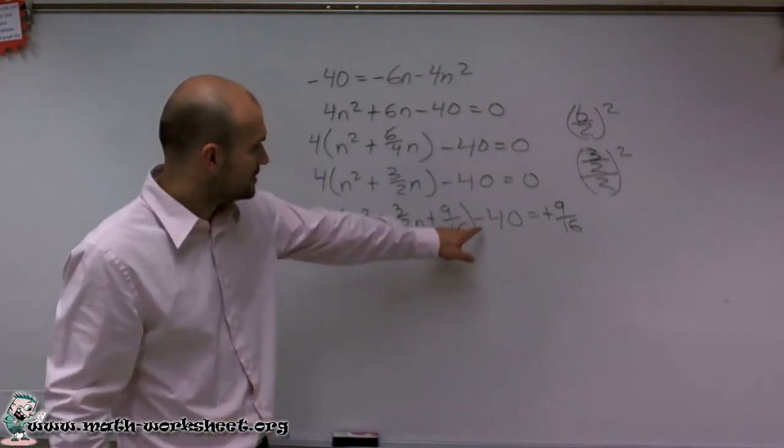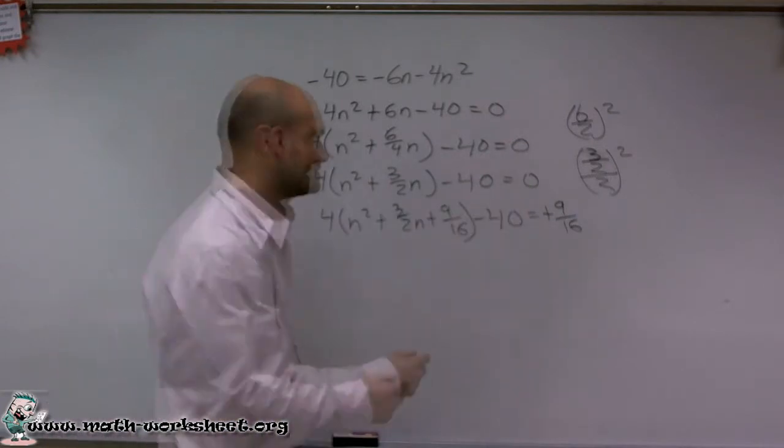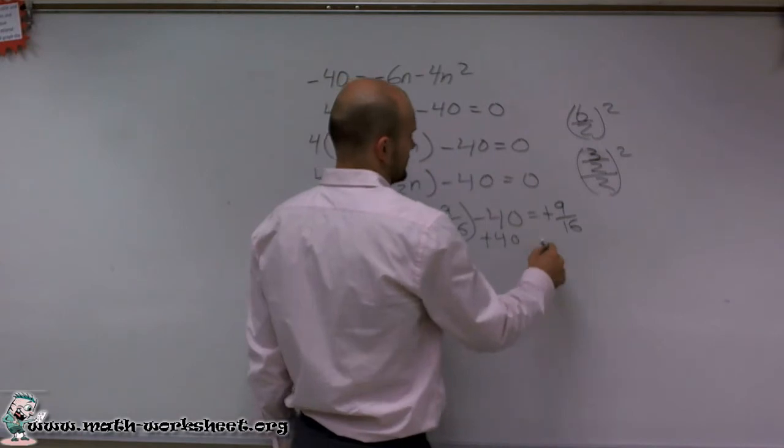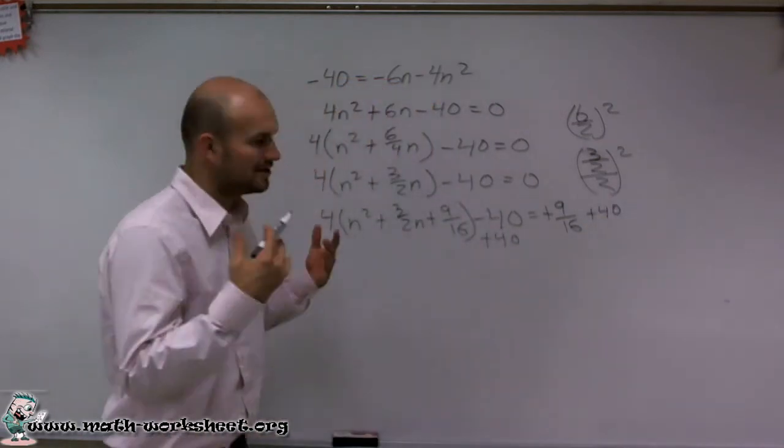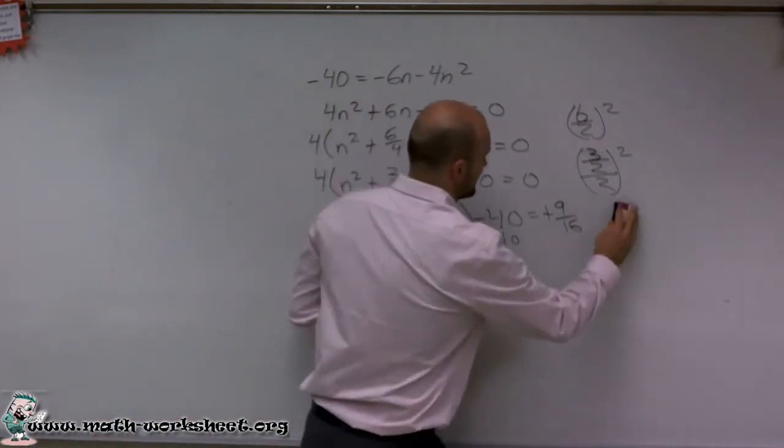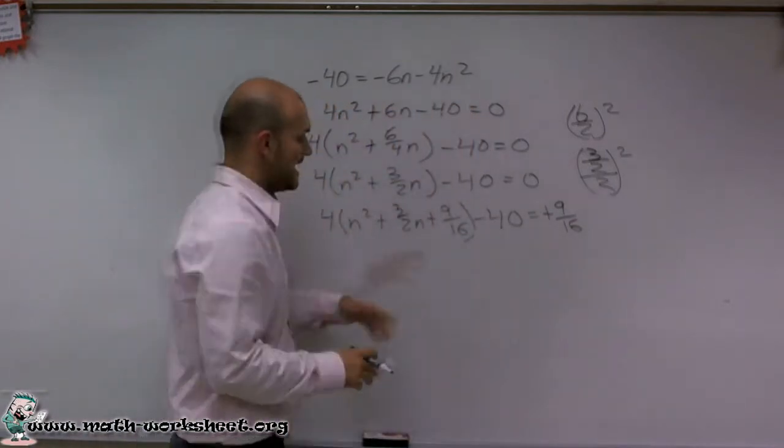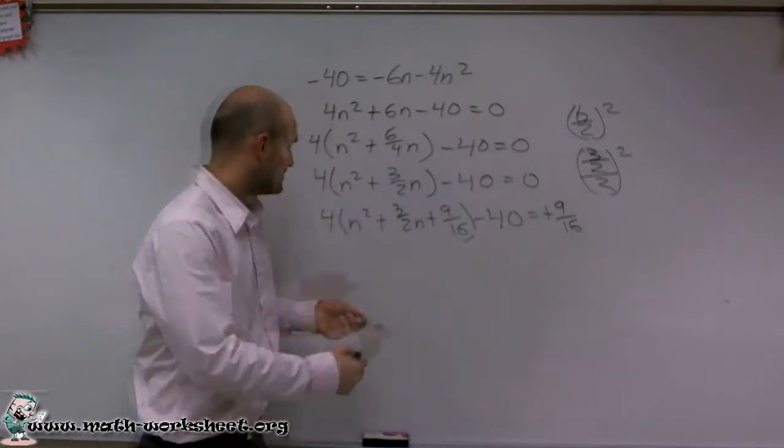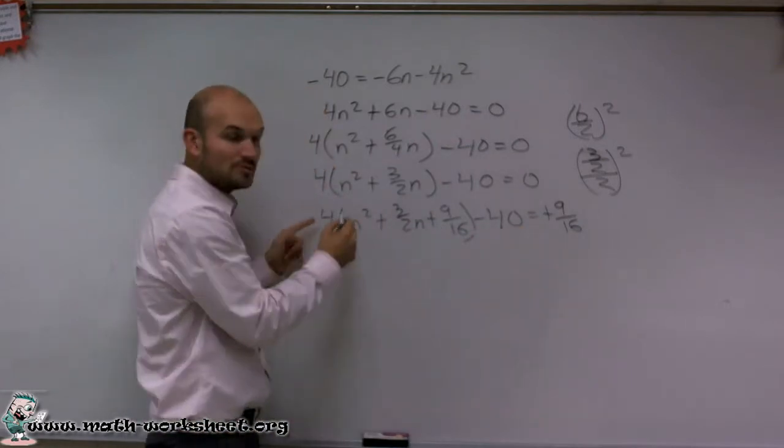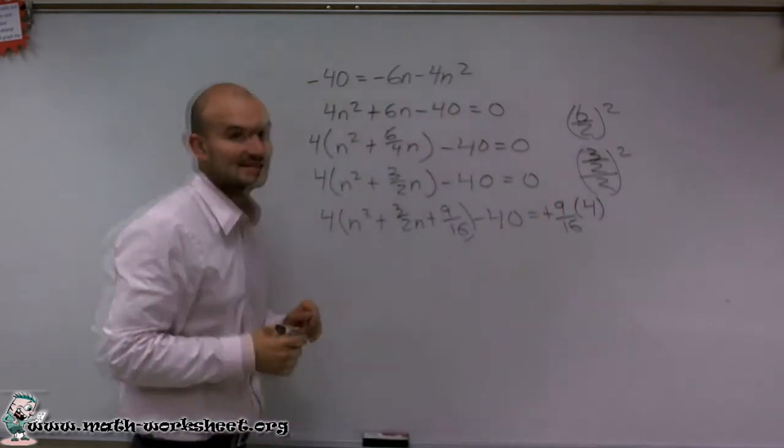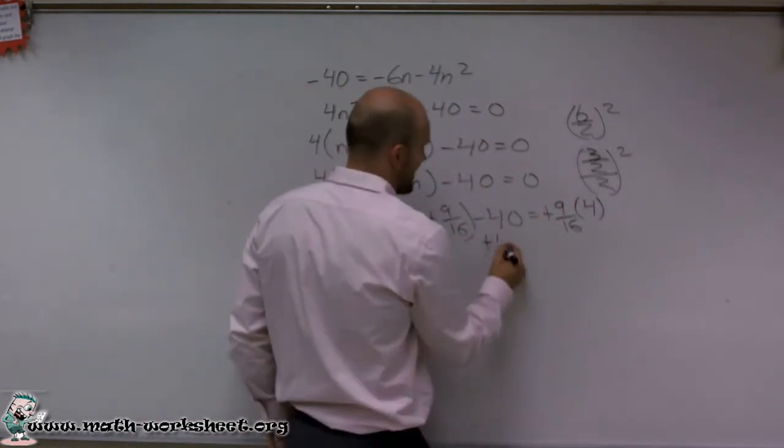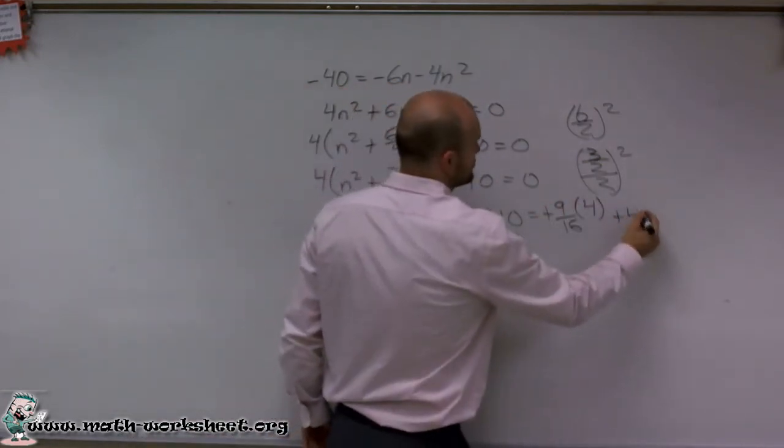Then, the other step is now I can add a 40 to the other side. And the other important thing to remember, before I add the 40 actually, let's go back here a step. I added the 9 sixteenths to the side, but then remember that 9 sixteenths is being multiplied by the 4. So I have to make sure I multiply this 9 sixteenths by the 4. Then, I can add my 40. Don't want to go too many steps ahead.